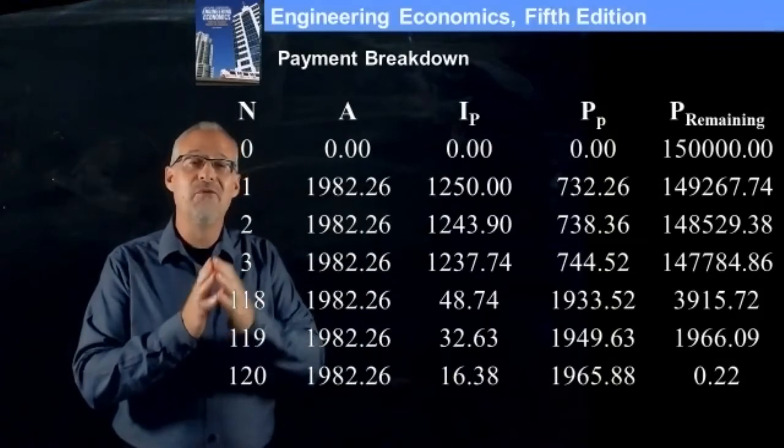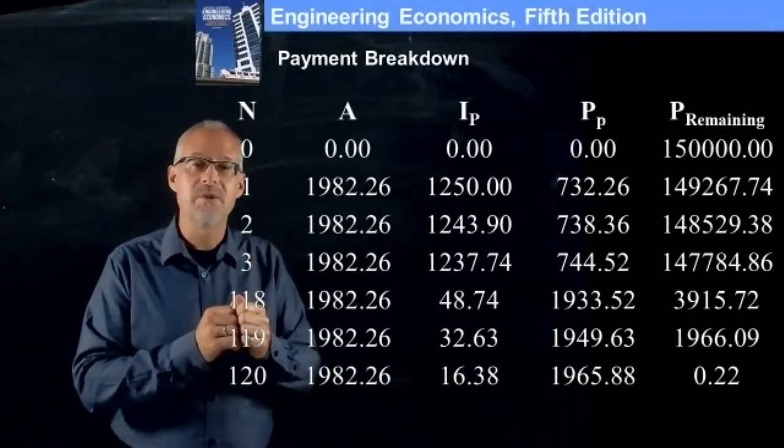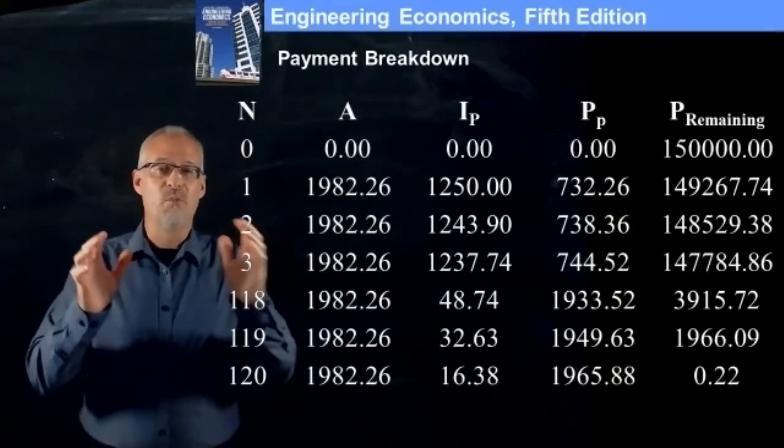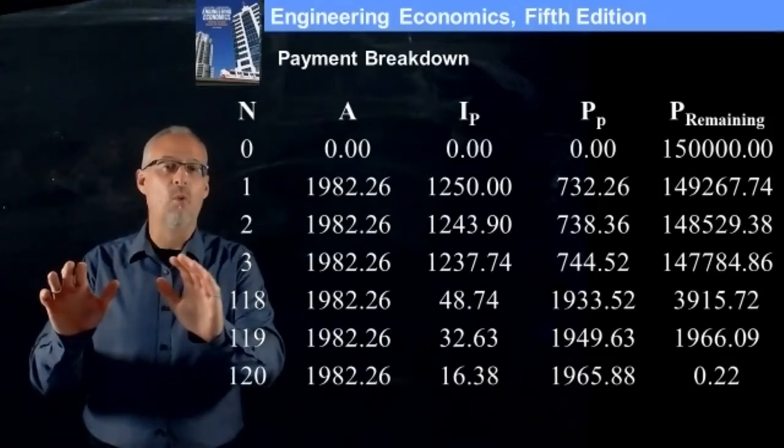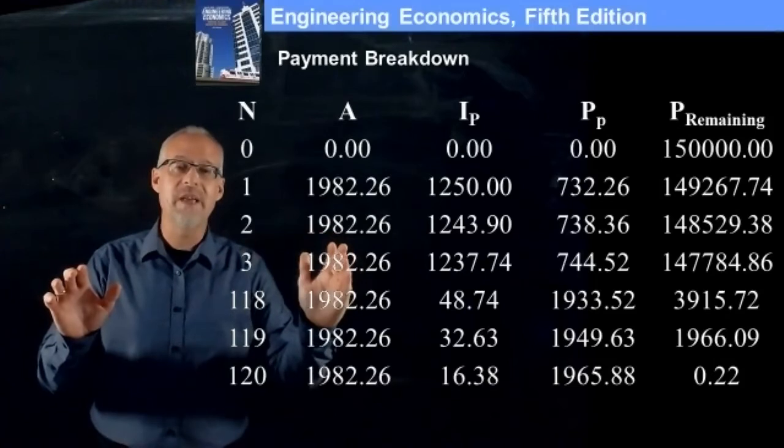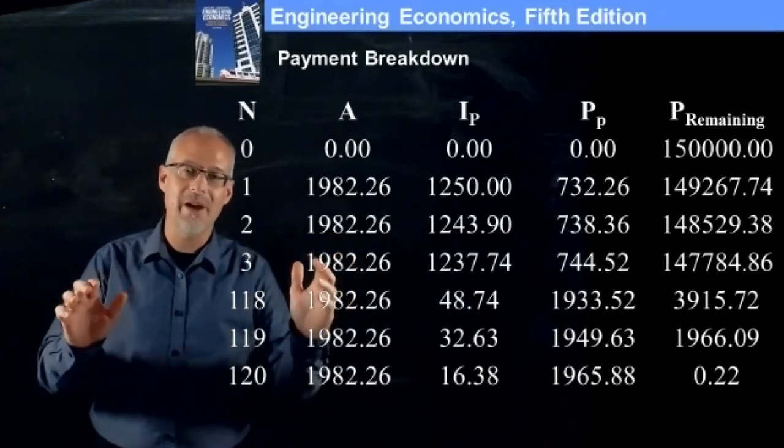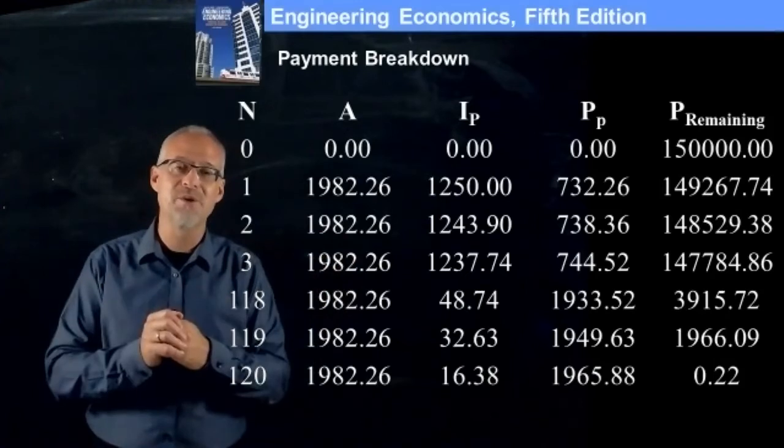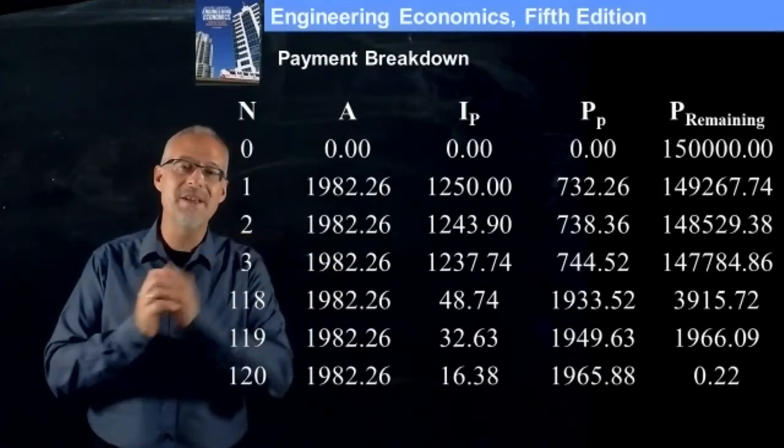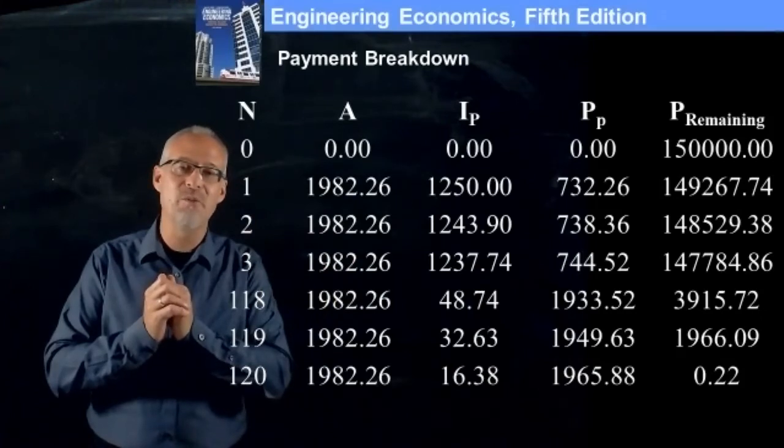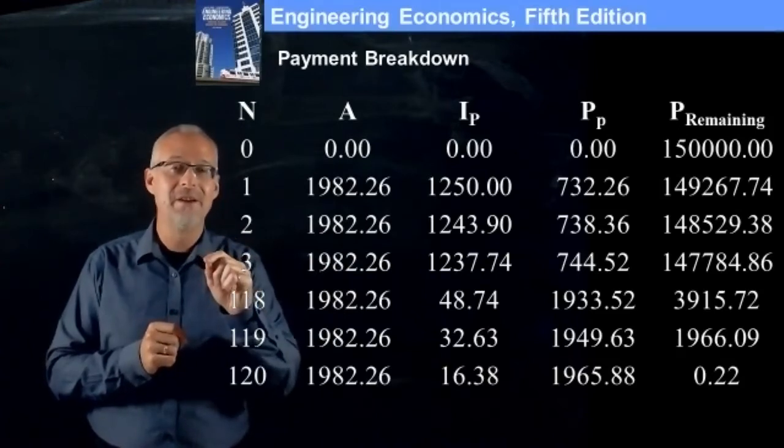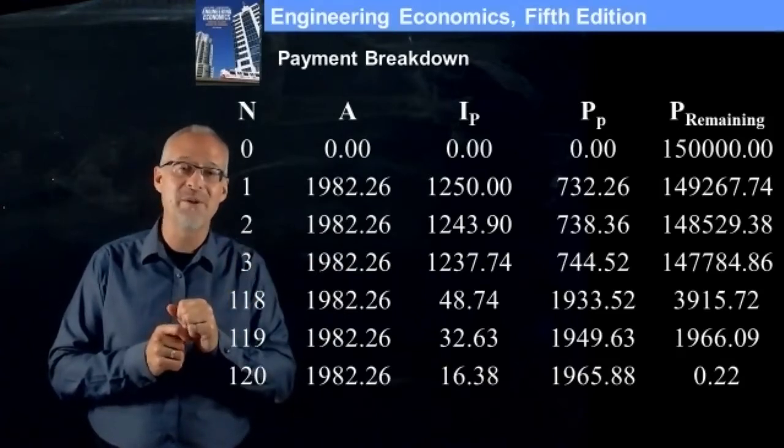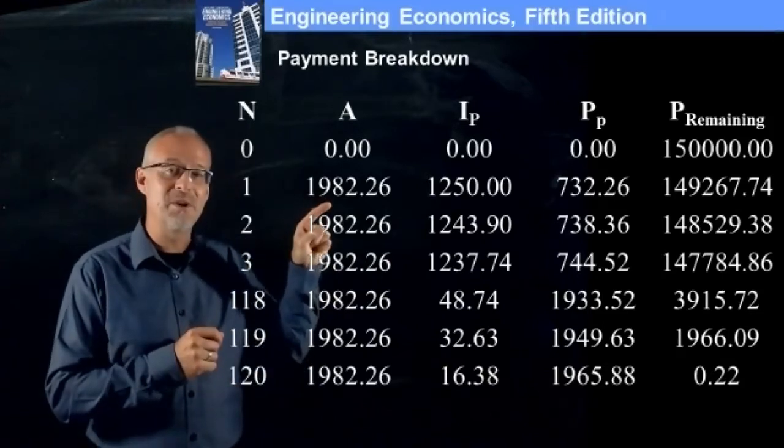At the end of the first month, so I want you to think about this for a second. You borrow $150,000. That's all you do at time t equal to zero. One month goes by. At the end of one month, interest has accumulated on that $150,000. And right at the instant that the interest is accumulated, you also make a payment. Right? You also make a payment, the one that we calculated as the A in the A given P compound interest factor. So that's our 1982.26. Our 1982.26 is the payment that we make.